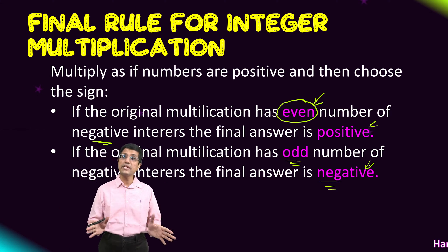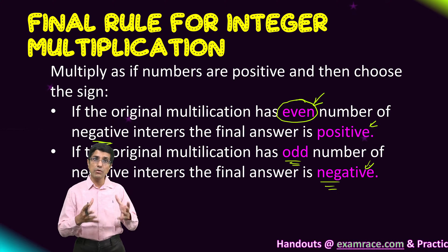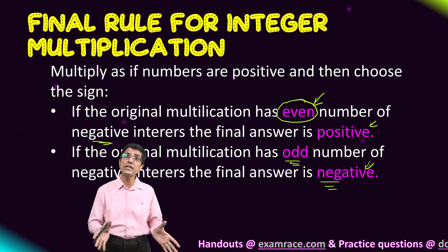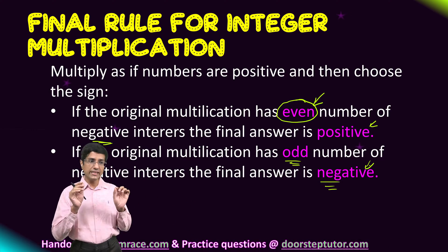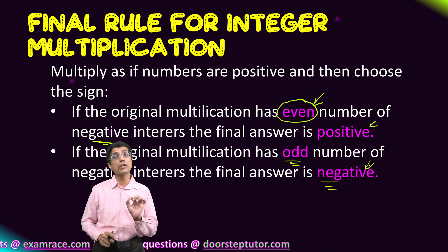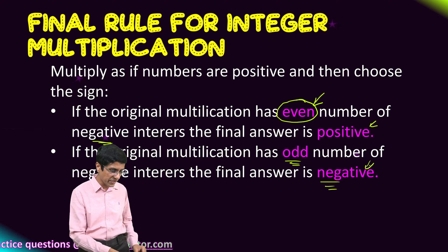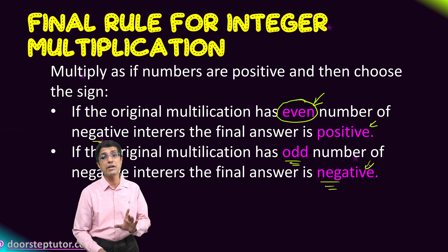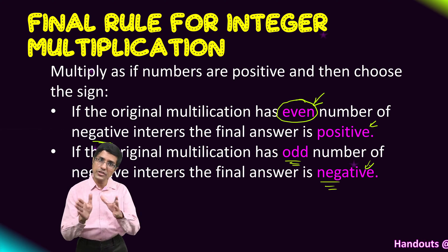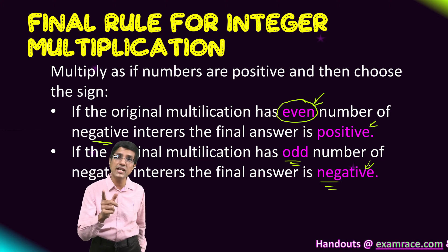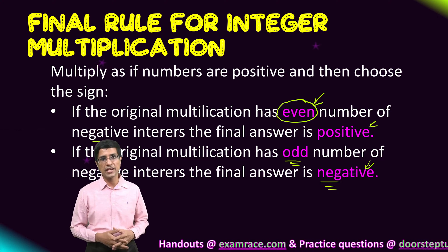So these are the final rules for multiplying integers: if the original multiplication has an even number of negative integers, the final answer is positive; if it has an odd number of negative integers, the final answer is negative. The next important topic is the properties of multiplication: closure, associativity, commutativity, and the distributive law — very important for your Olympiads. If you have questions, put them in the comments below, and practice questions — that is what will ultimately make you an expert. Thank you very much.